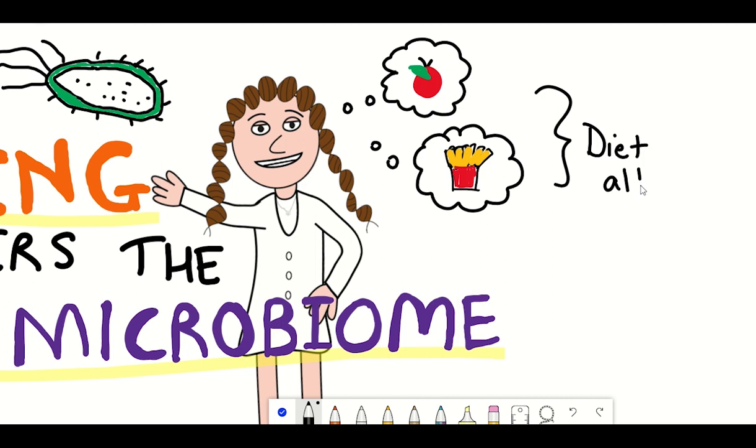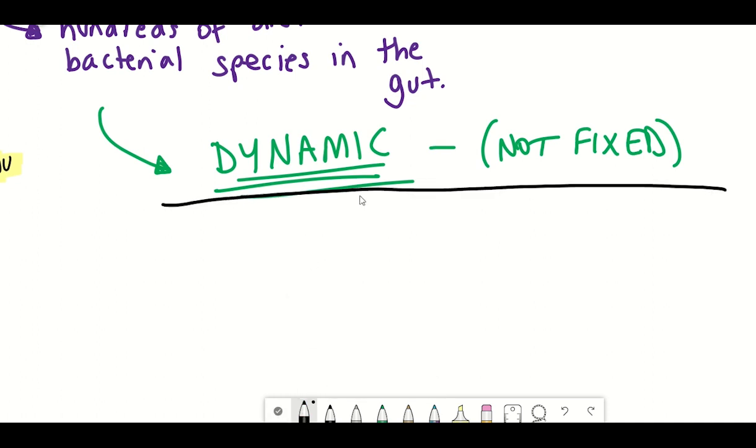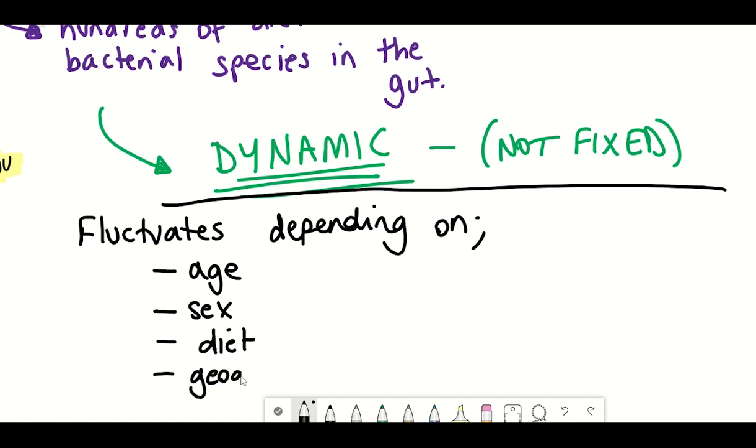But a much simpler treatment may just be through modifying diet, as there are now studies showing that diet alters the composition of the microbiome. The really important thing to understand is that our microbiome is not static. It varies depending on your age, your geographical location, your sex, and as I mentioned, your diet. And not only does it change on these larger timescales, but there are also daily fluctuations within the gut microbiome composition as well.